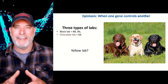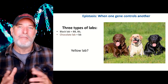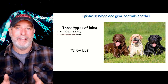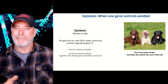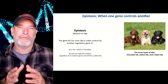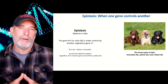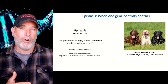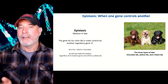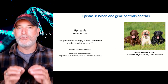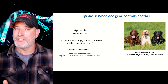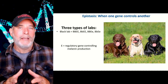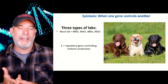I said 'potentially' because this is where epistasis comes in. You can have a BB genotype and still have a yellow lab. The gene for fur color is under control by another regulatory gene we'll call E. If you have the dominant form, the gene works and you have melanin production. If you have two copies of the recessive allele, the gene doesn't work and you have no melanin.